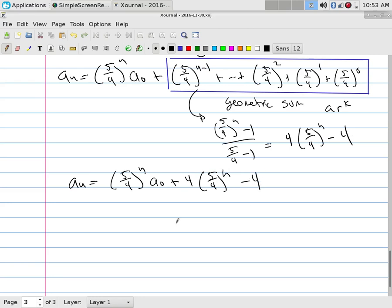That's kind of nice. a_n is equal to (5/4)^n times a_0 plus 4(5/4)^n minus 4. And that means a_n is equal to - hey look, there's two (5/4)^n - a_0 plus 4 times (5/4)^n minus 4.